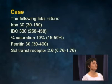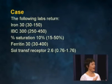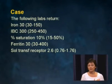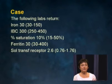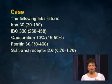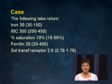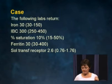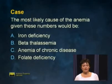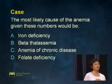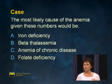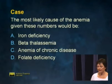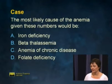Your iron studies come back: iron is 30, iron binding capacity is 300, percent saturation is 10%, ferritin is 30, and the soluble transferrin receptor is 2.6. The most likely cause of this anemia, given those numbers, would be iron deficiency, beta thalassemia, anemia of chronic disease, or folate deficiency.